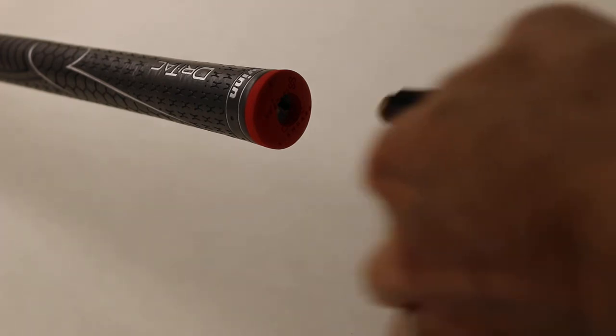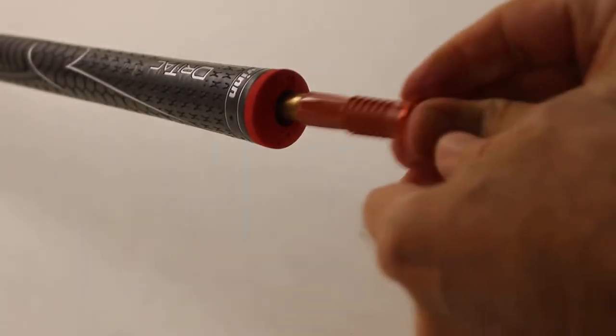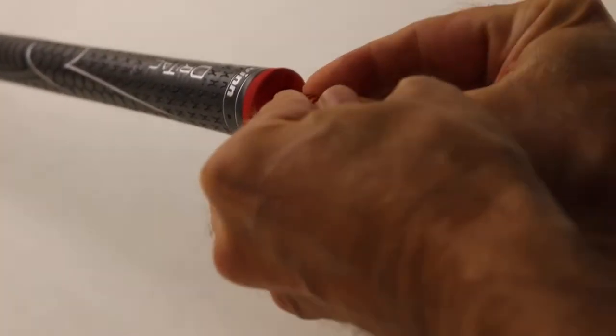Once the hole is made, the weight can be inserted. The longer weights have a rubber centralizer to prevent rattling. Rotate the weight to get the rubber centralizer through the hole.